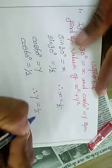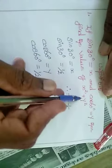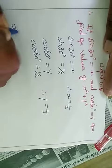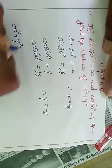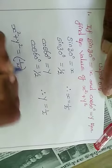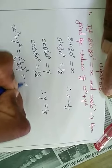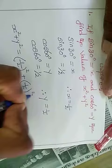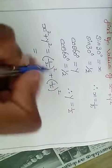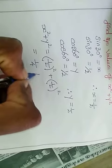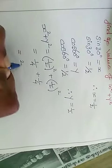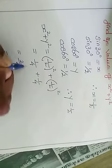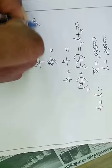Now find the value of x square plus y square. So x square plus y square equals 1 by 2 whole square plus 1 by 2 whole square, which equals 1 by 4 plus 1 by 4, that is 2 by 4, which simplifies to 1 by 2.